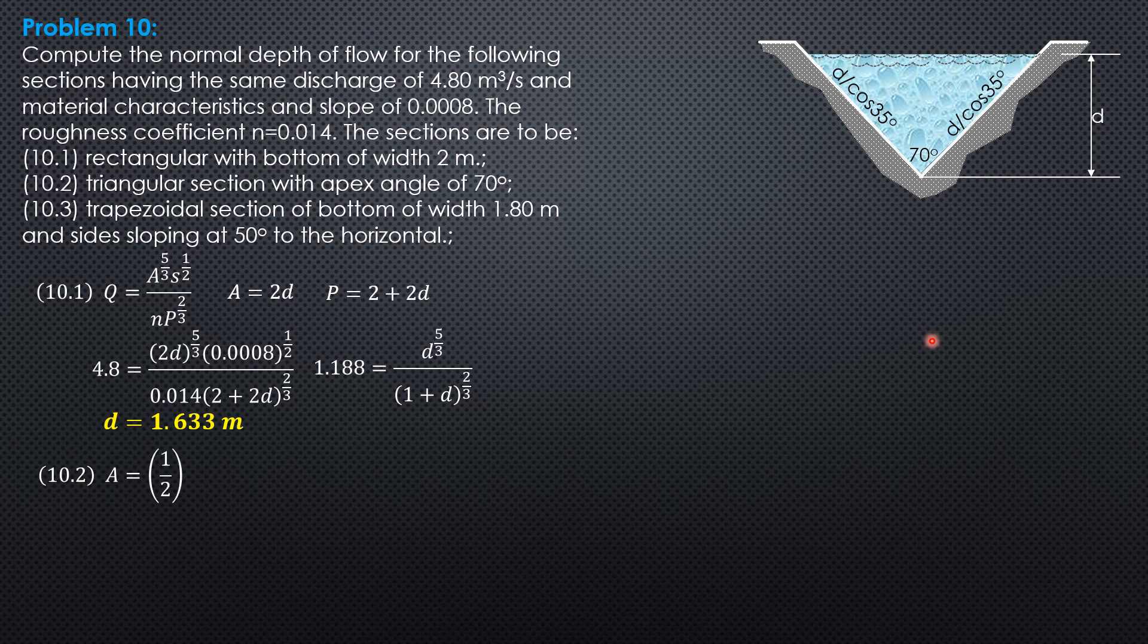Area is 1 half of quantity D over cosine 35 square, sine of included angle. Remember, area of triangle is 1 half product of adjacent sides, sine of included angle. Simplifying, that's 0.7002 D square.